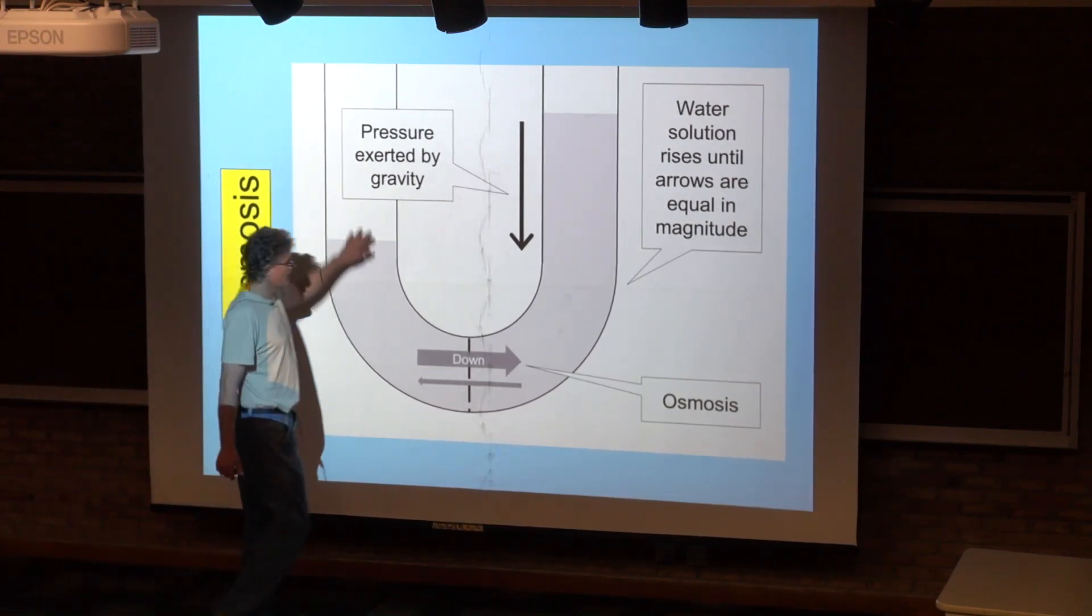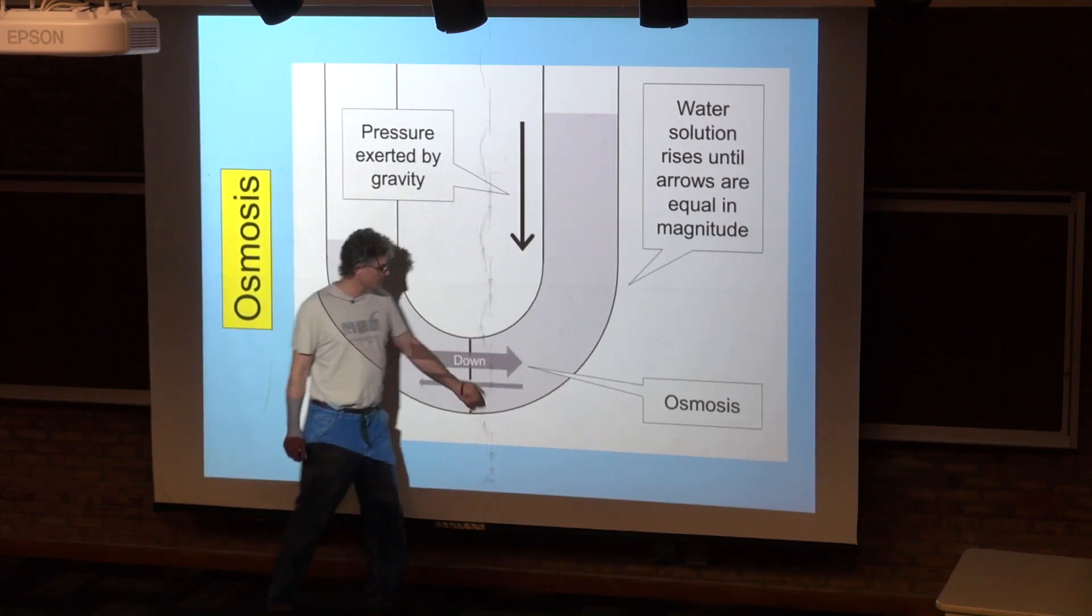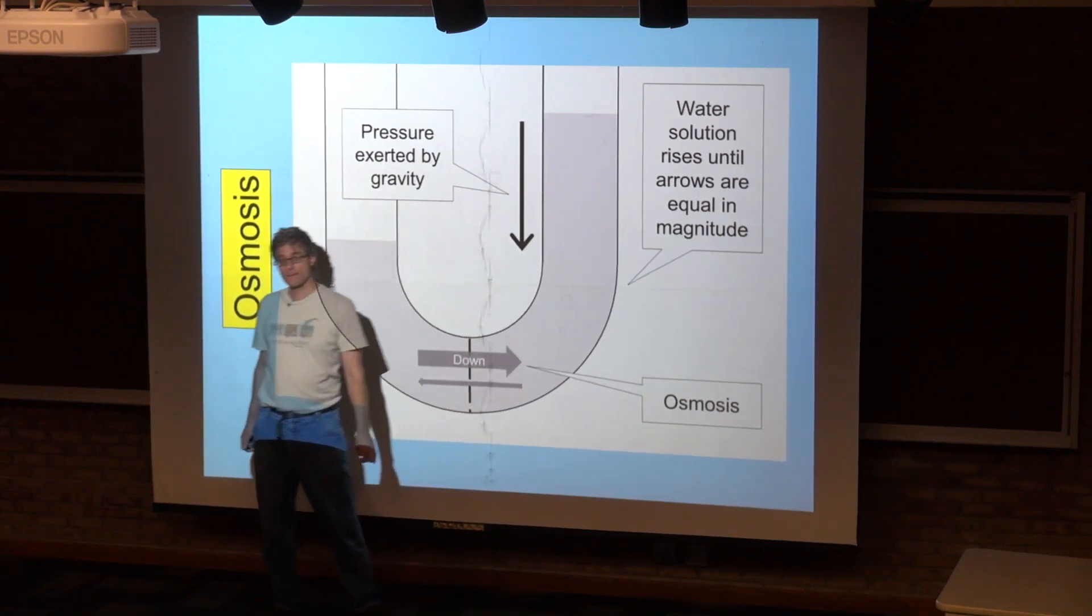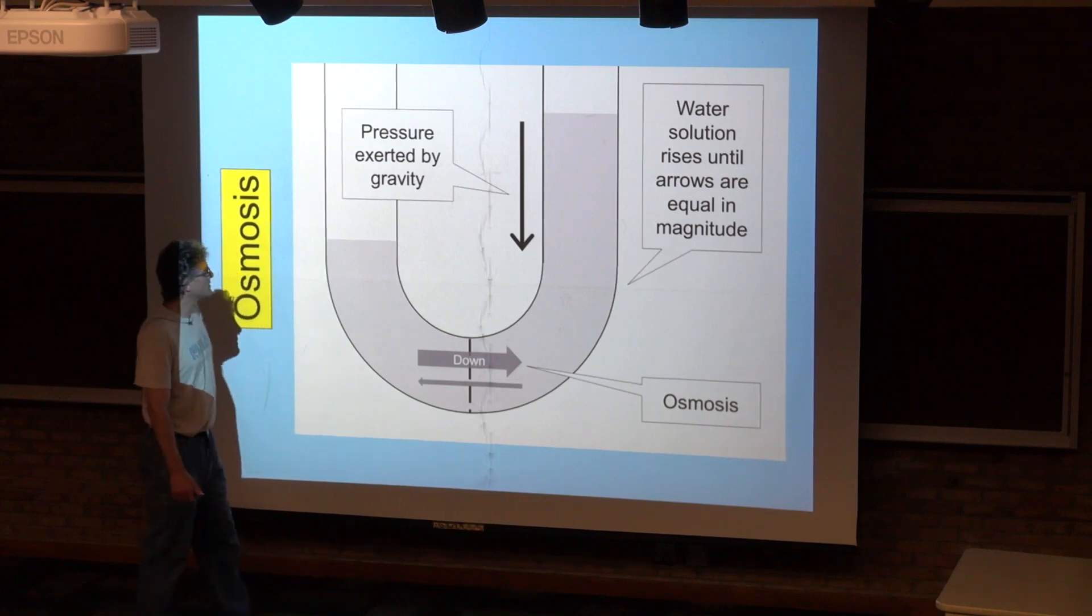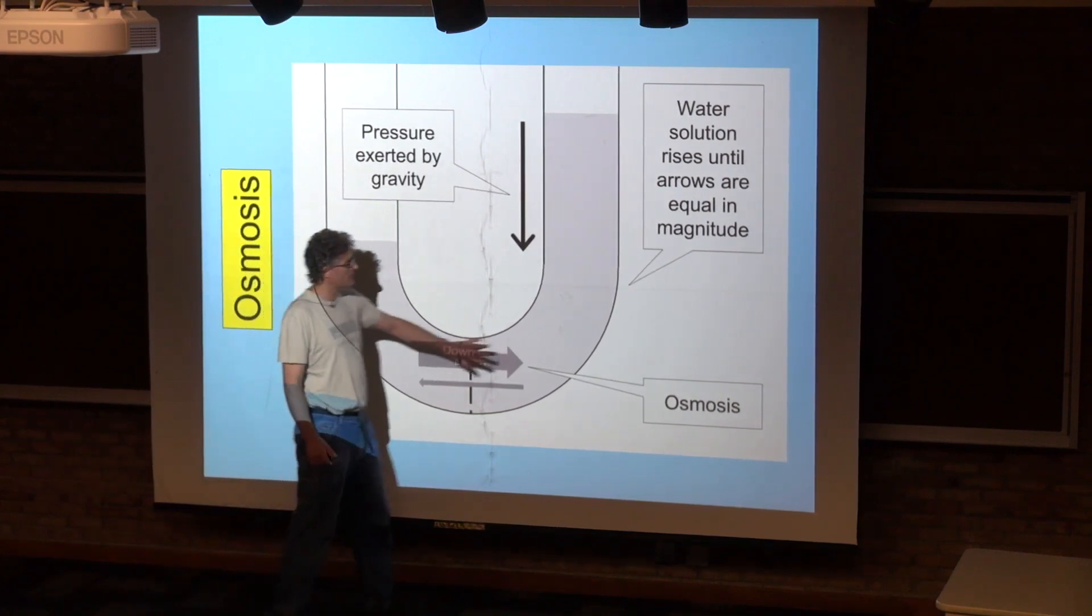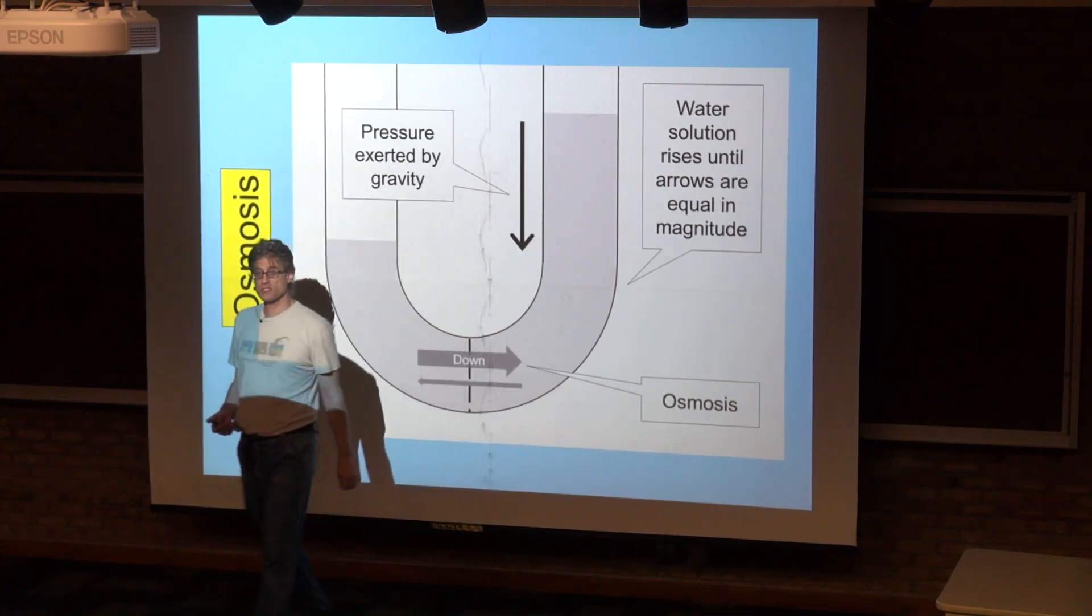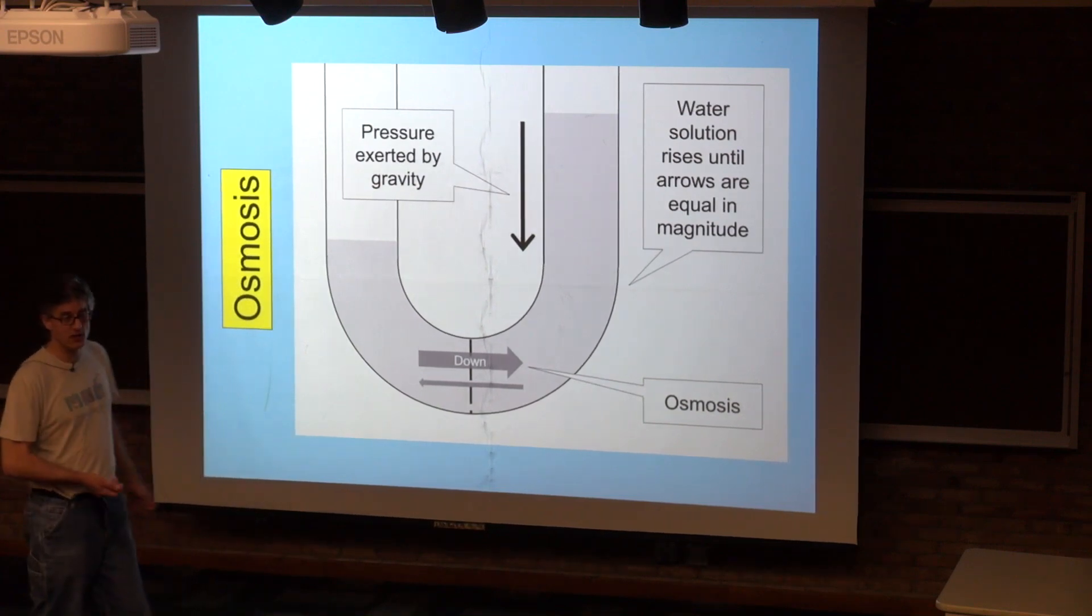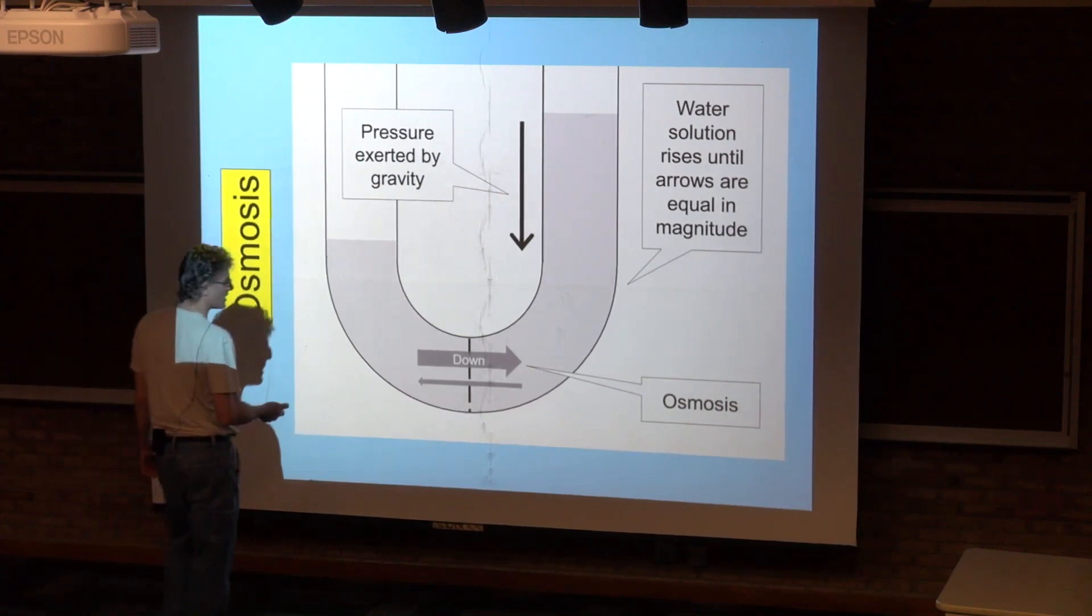This U-shaped tube is an apparatus that we use in order to study osmosis. The tube has a fluid in it, and in the middle of the tube is a membrane. We can put on either side of the tube solutions containing different amounts of salts or sugars or what have you, solutes.